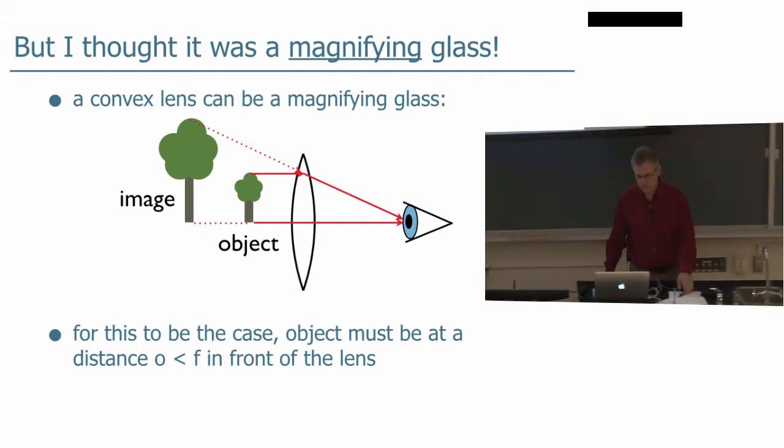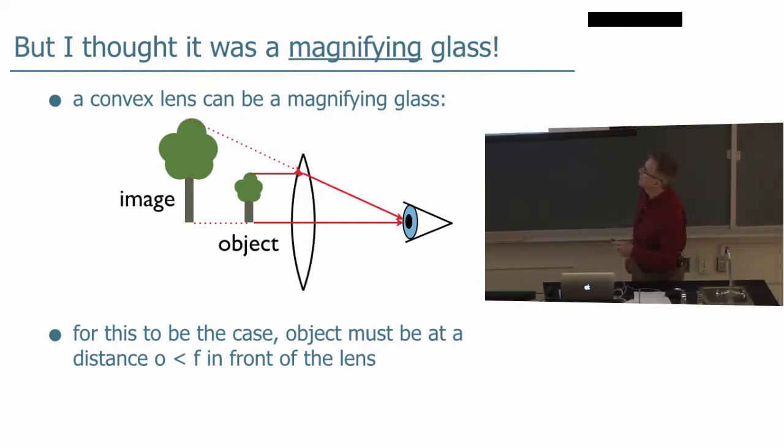Now, in the case that we've drawn here, we have the object here, the parallel ray coming in, is bent like that. If you put your eye here, and look at the image, it looks like the image is twice the size of the object. So, yes, a converging lens can be a magnifying glass, if you will, but it doesn't have to be, as we'll see. It can make images which are bigger or smaller than the actual object.